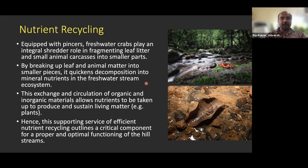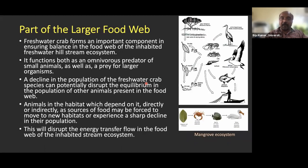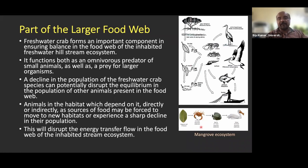Crabs are also part of the larger food web. A typical example is the mangrove ecosystem, where you cannot visualize any food web without crabs. Crabs play a central role in mangrove ecosystems because mangrove leaves have a high lignin component, and crabs act upon them first so that other organisms can decompose them at a faster pace.